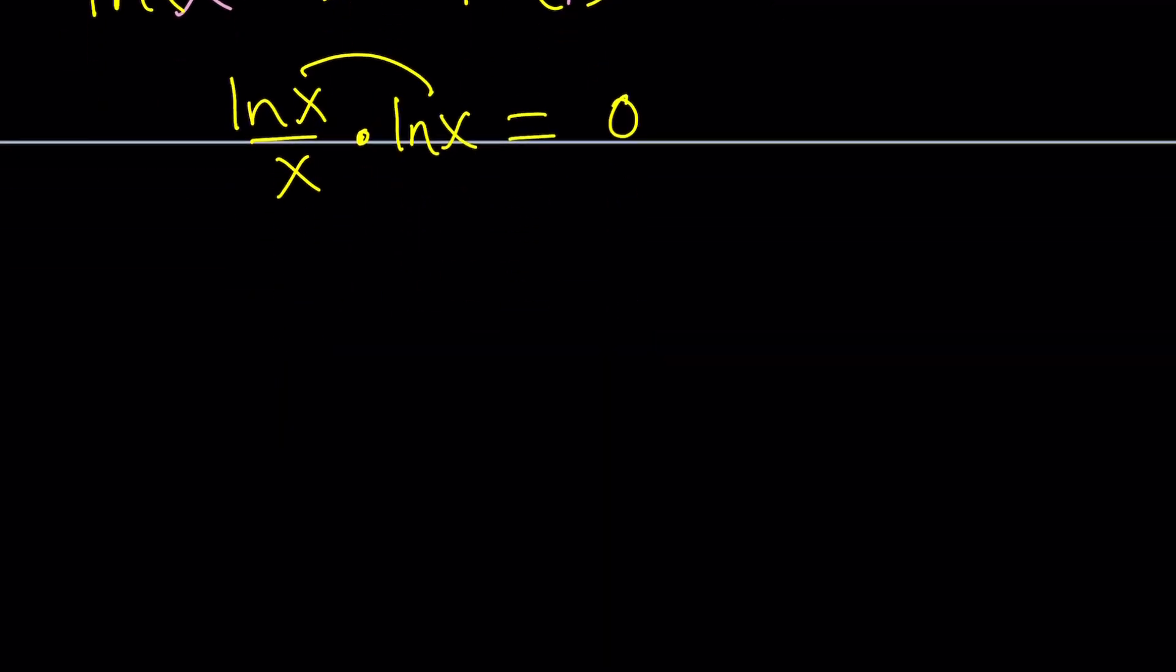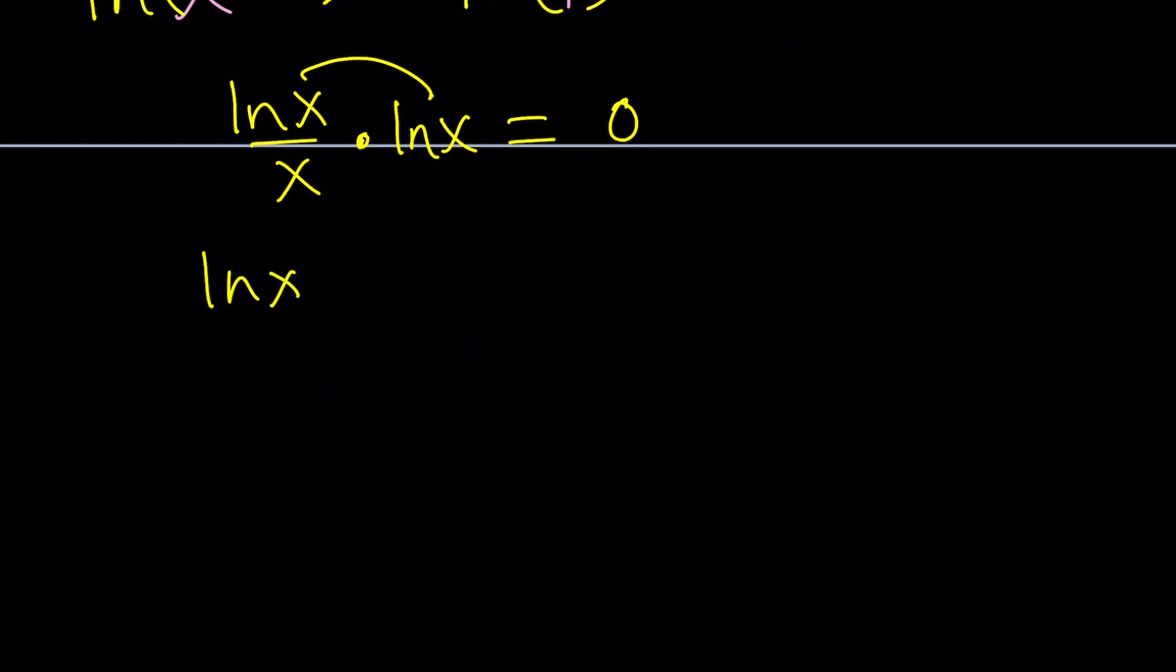ln x over x times ln x equals ln 1, which is 0. ln x's are multiplied. And that gives us ln x squared divided by x equals 0. And from here, you only get one solution. The denominator should not be 0. ln x should be 0. And that implies that x is equal to 1. Well, we only got one solution. Even though it's repeated, x equals 1. That's it.